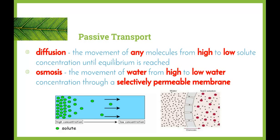Osmosis is the movement of water from high to low water concentration through a selectively permeable membrane. Remember, if we don't include that last part about being across the selectively permeable membrane, we have not technically defined osmosis. As we can see in the second picture, there's a higher concentration of water outside the cell and a lower concentration inside in the salt solution, so water will move across the semi-permeable membrane to try to equalise that.